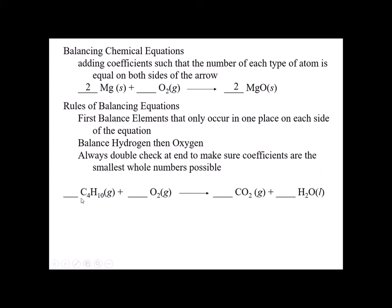For this combustion example with carbon, hydrogen, and oxygen: carbon only appears in one place, so I've got four carbons on the left and one on the right — I put a coefficient of four in front of CO2. Then, since oxygen appears on two different elements on the product side, I do it last. I look at hydrogen first: I've got 10 here, and since water is H2O, I divide 10 by two to get five, giving me a coefficient of five in front of water.